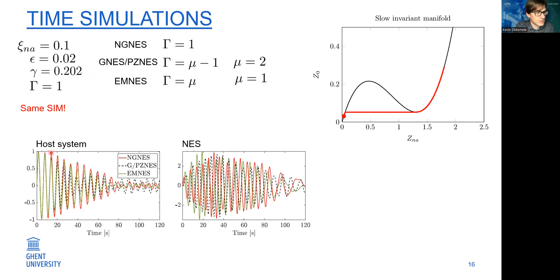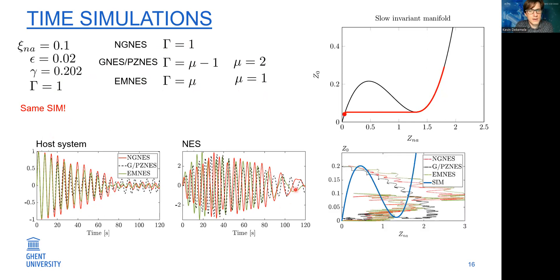These are the vibrations of the host system, and what you see here is the decay in the host system for all configurations is more or less the same. There are some slight differences of course. The vibrations in the NES are also more or less the same. If we plot the two vibrations in a phase plane, we can see that the slow envelope manifold is on average followed. One remark: when doing this simulation, I found that the piezoelectric NES needs a very high inductance in its circuit, while the electromagnetic NES doesn't need that, but it needs high capacitance.